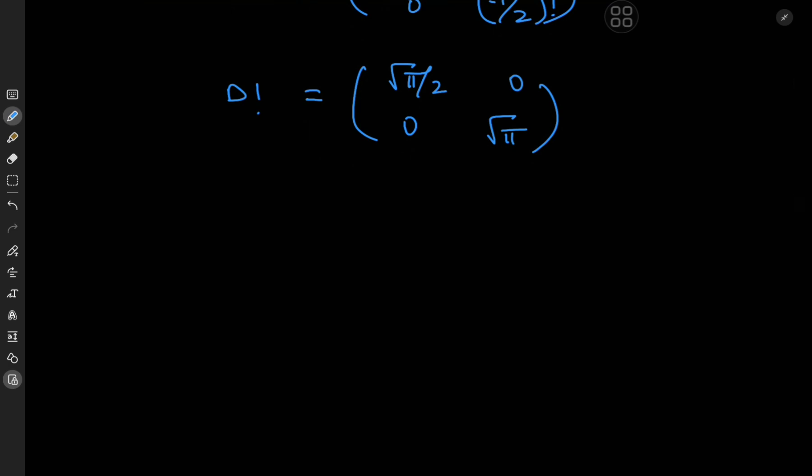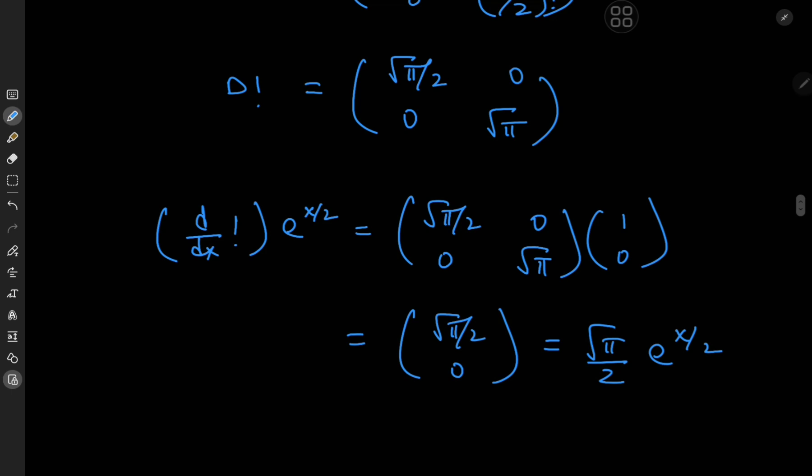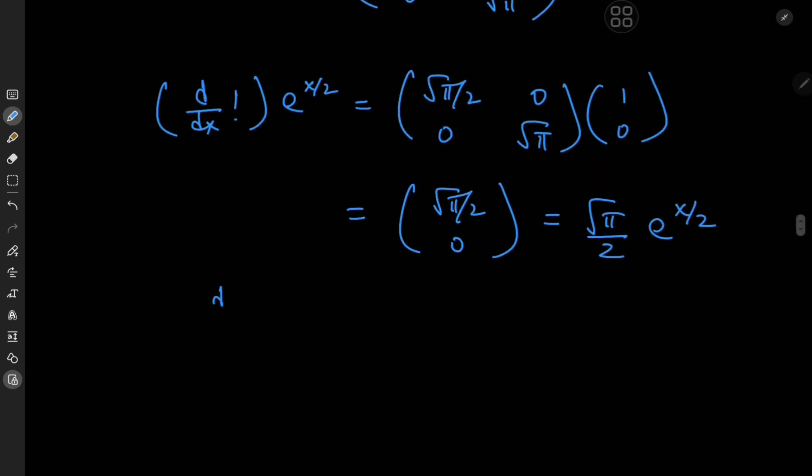Now let's apply this operator to the basis vectors, because once you know how an operator acts on the basis vectors, you know how it acts on pretty much all the vectors in the vector space. What is d by dx factorial of e to the x by 2? That would be this matrix times the matrix 1, 0. That would give you this vector, it's root pi by 2, 0. This would be root pi by 2 times the basis vector e to the x by 2. By similar token, applying the operator d by dx factorial onto the basis vector e to the negative x by 2 would give you root pi times e to the negative x by 2, which is pretty interesting indeed.